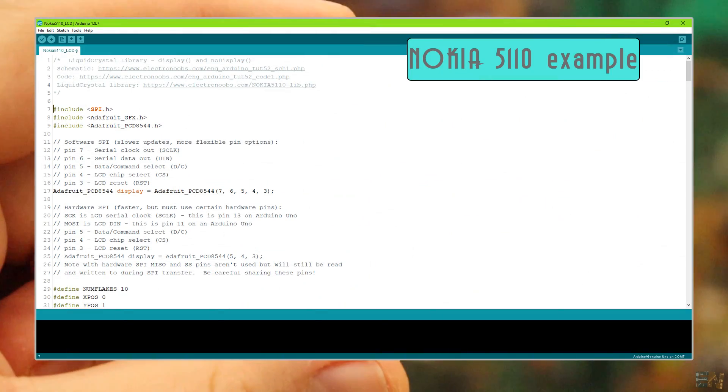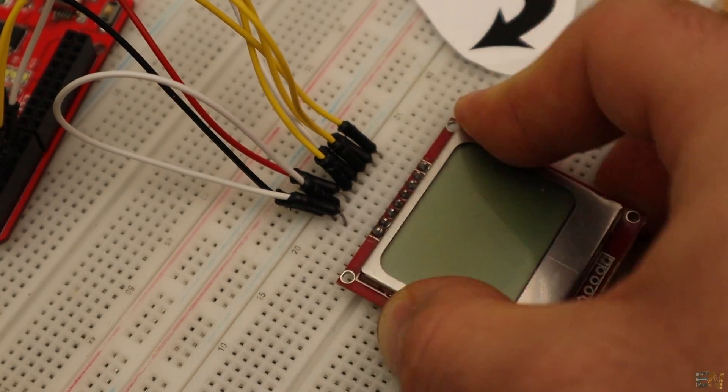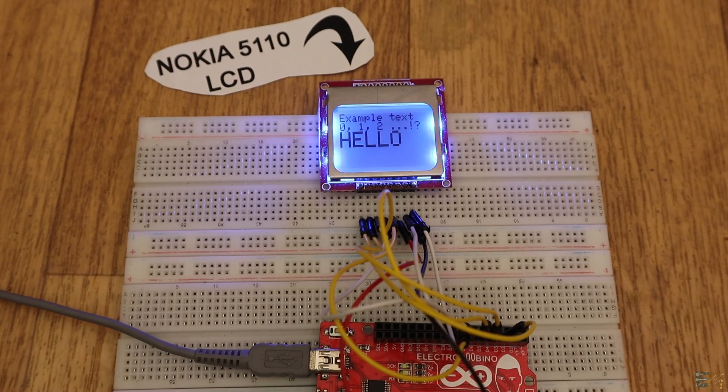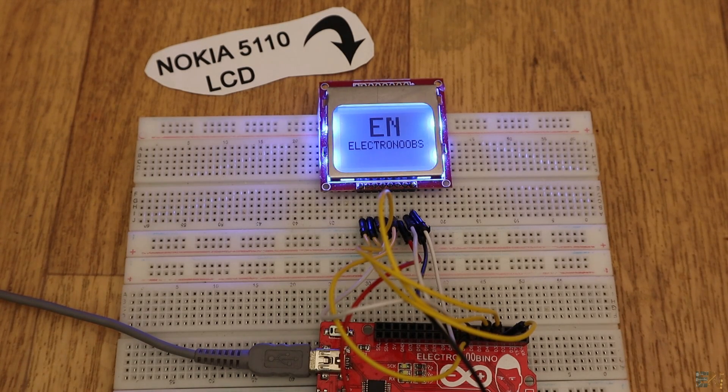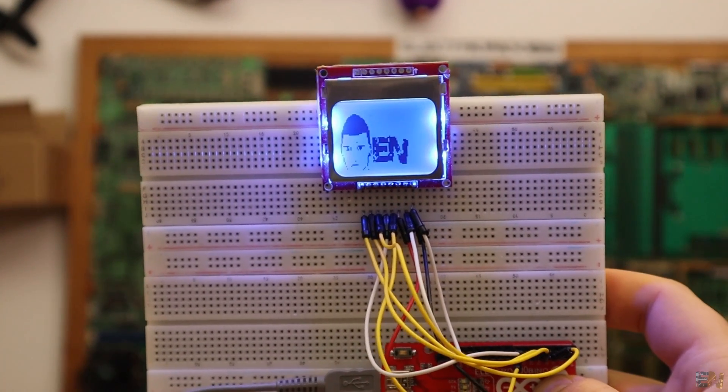Now go below and download the code and libraries for this display. The code is named exampleNokia5110. Upload the code and now, as before, we have an example of how to print text, numbers and your own logo, made as before using the image to LCD program.